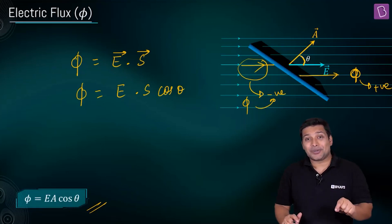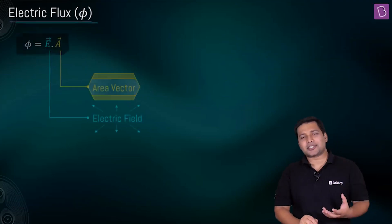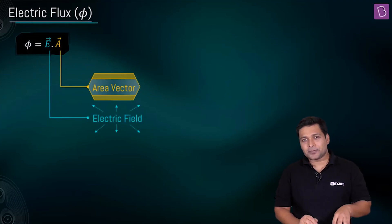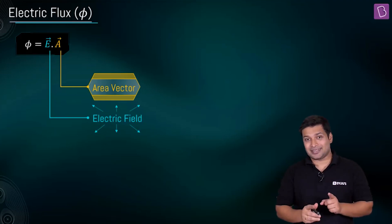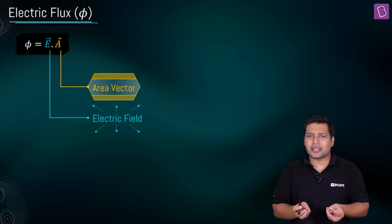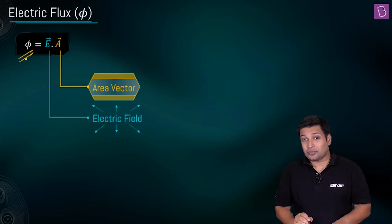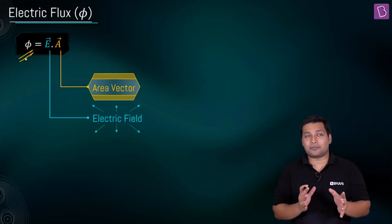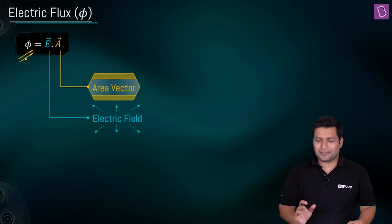Since flux is a dot product of area and electric field — not a cross product — orientation in the cross-product sense does not apply here. Both area and electric field are vector quantities, but their dot product yields a scalar. Therefore, the value of phi (flux) is a scalar quantity — no i-cap or j-cap will be associated with it.